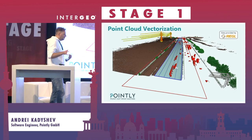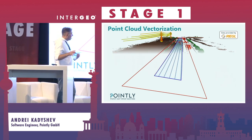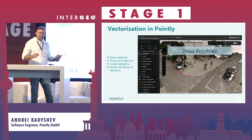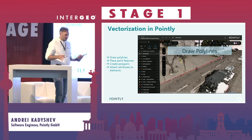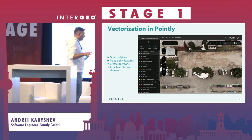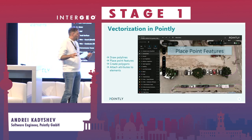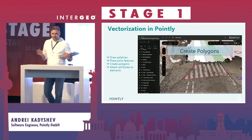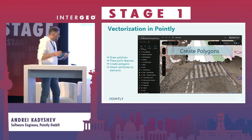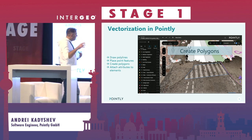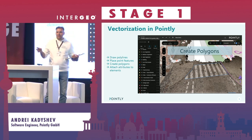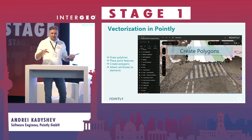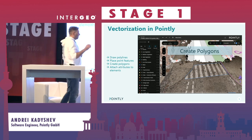The same is relevant for vectorization. Recently, we delivered new features that allow you to create vector objects around the point cloud manually. You may draw polylines, place point features, or create polygons. You can combine this manual approach with classification, which is very efficient — because when you place objects on a raw cloud, you may miss details or make mistakes, but when you use a pre-classified cloud for manual vectorization, it increases your efficiency significantly.